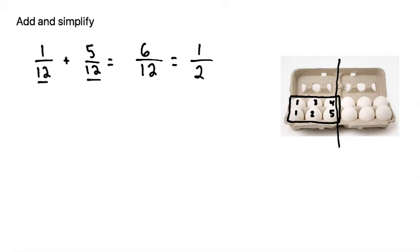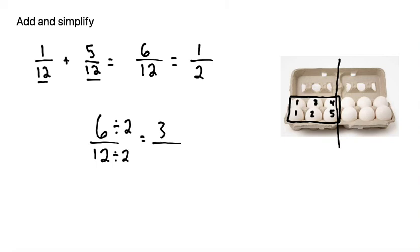And to do that using arithmetic, we can take 6 over 12. Notice that both 6 and 12 are even numbers. So if we divide 6 by 2, we get 3. And if we do something to the numerator, we have to do the same thing to the denominator, so that would be 12 divided by 2, which gives us 6. Now both 3 and 6 have a factor of 3, so we can divide top and bottom by 3 to get 3 divided by 3 is 1, and 6 divided by 3 is 2. This confirms that the answer is 1 half.